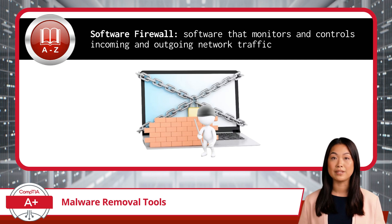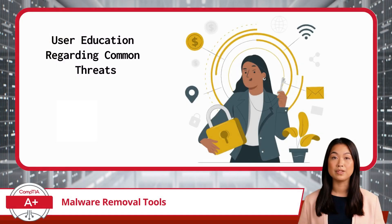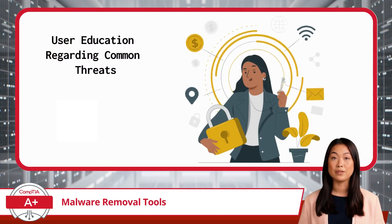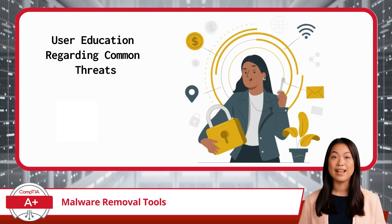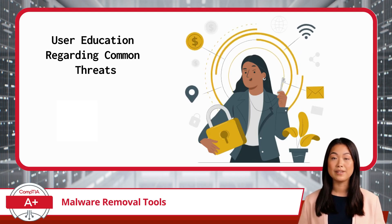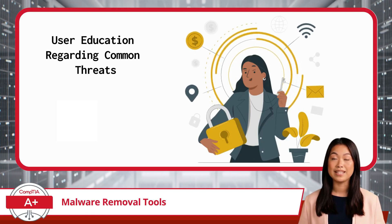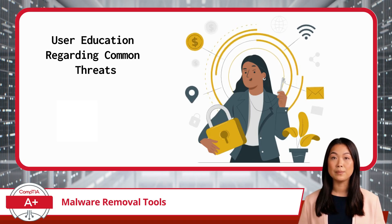However, no tool can substitute for well-informed users. This is where user education becomes critical. Training users to recognize potential threats is one of the most effective ways to prevent malware infections. Teaching employees how to avoid phishing scams, identify suspicious links, and practice safe browsing can drastically reduce the company's risk. Even the most secure system can be compromised by a single careless click. And since phishing remains one of the most common entry points for malware, anti-phishing training is a must.